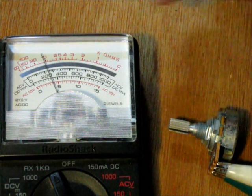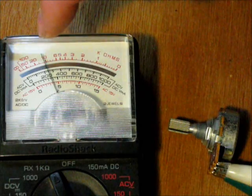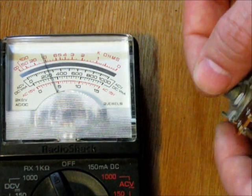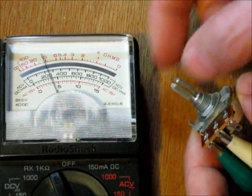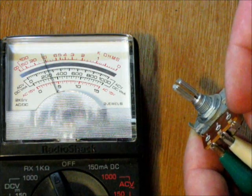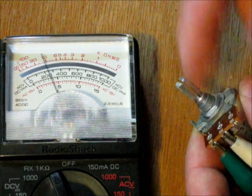Now I've zoomed in so you can see the meter better. Right now I have the full reading. The resistor is turned all the way to the farthest right, which gives maximum resistance on the middle wiper.